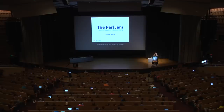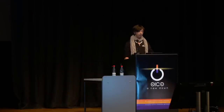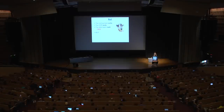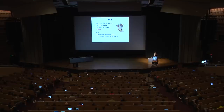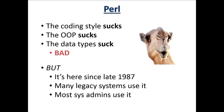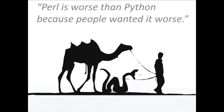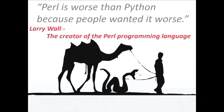So today I'm obviously going to talk about Perl. Its coding style sucks. Its OOP sucks. Its data types suck bad, but it's been here since late '87. Many legacy systems use it, most sys admins use it, and unfortunately too many security experts use it. To summarize in a quote: 'Perl is worse than Python because people wanted it worse.' — Larry Wall, the creator of the Perl programming language.